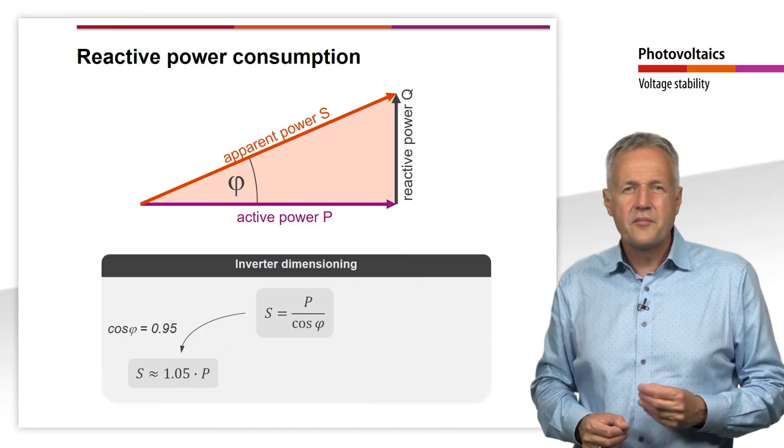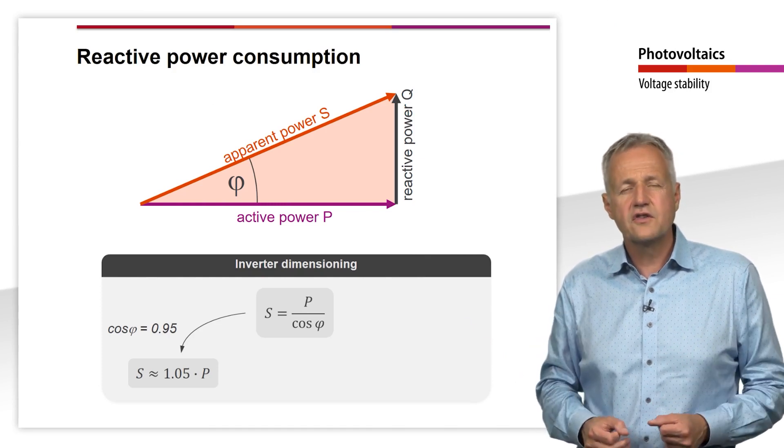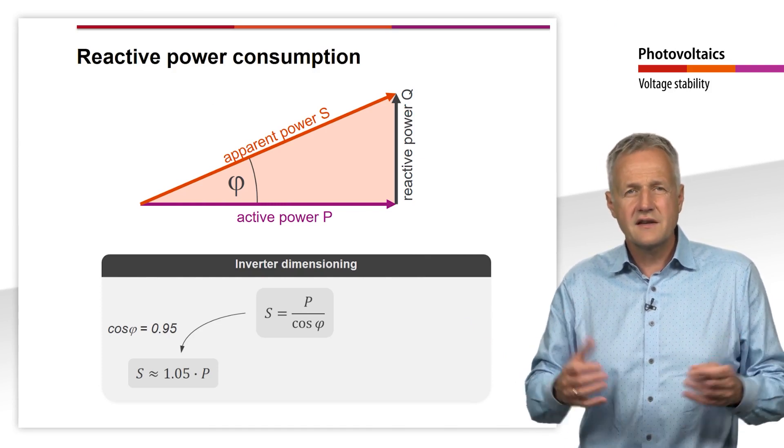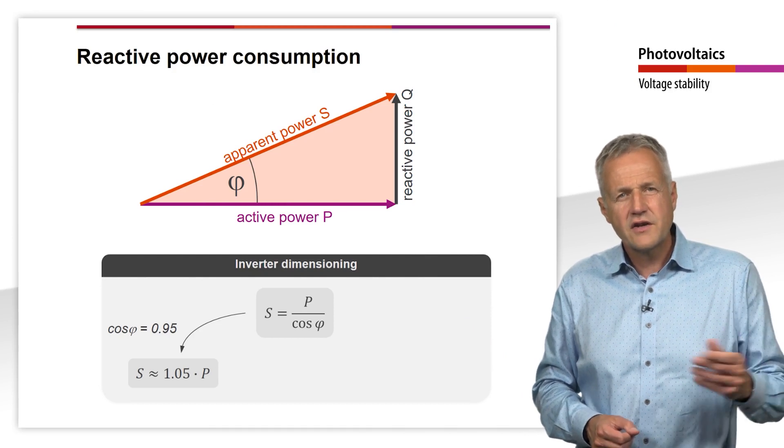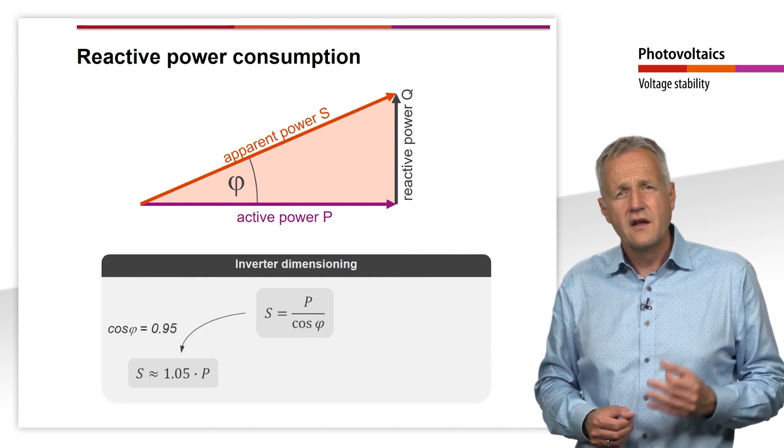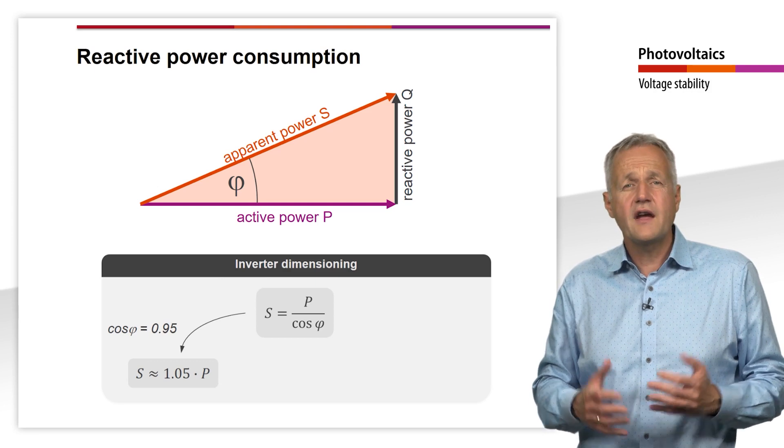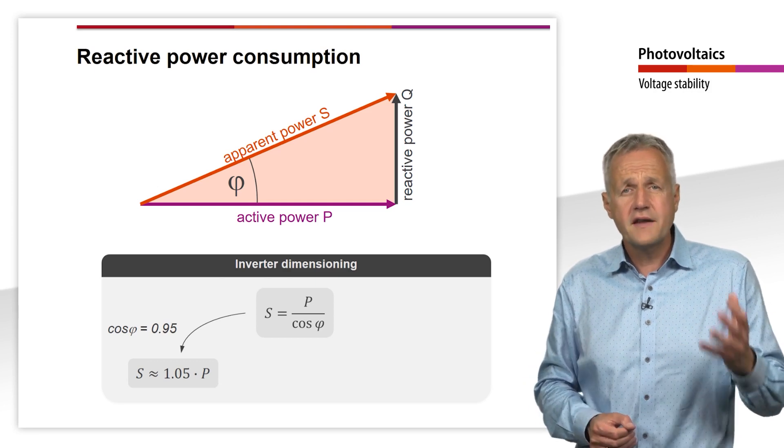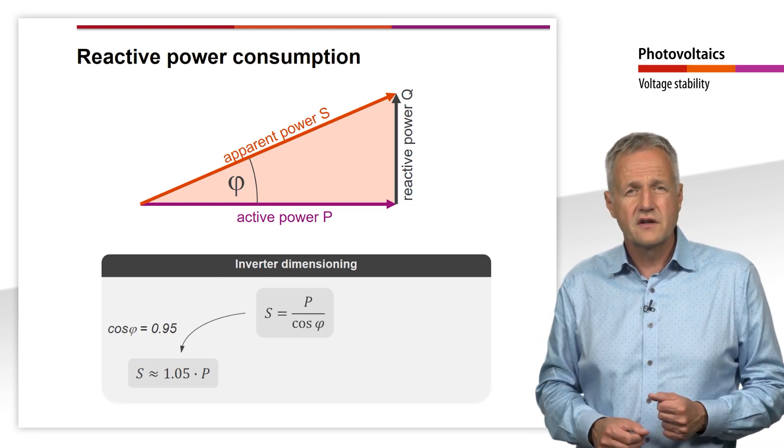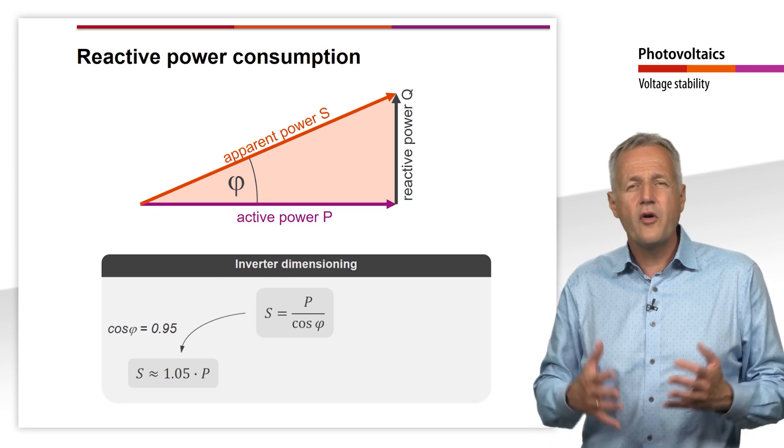Let's take a brief look at what this means in practice and consider a plant with 10 kW peak. The grid operator specifies that a fixed cosine phi of 0.95 must be set on the inverter.